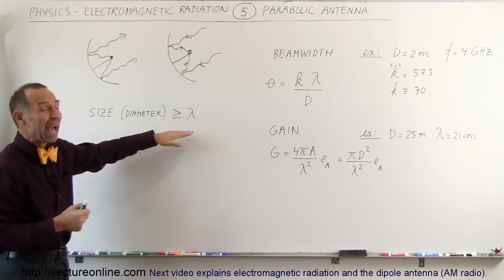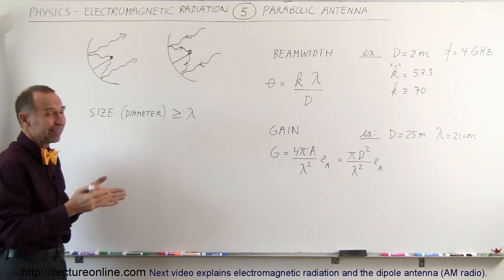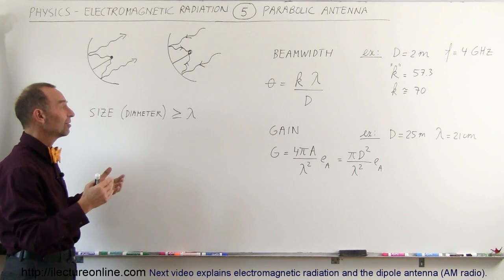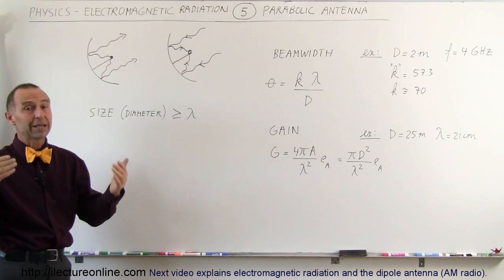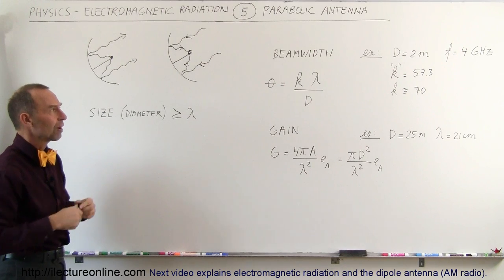For example, if that diameter is only half the wavelength you only get partial efficiency of the signal. If it's less than half the wavelength you probably don't have a very good antenna at that point. Basically you want the diameter to be much bigger than the wavelength of the signal that you're trying to receive or transmit.